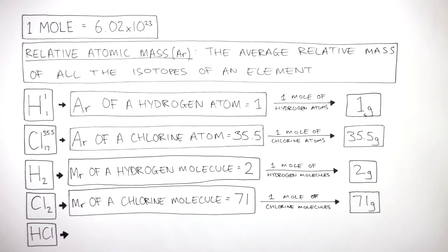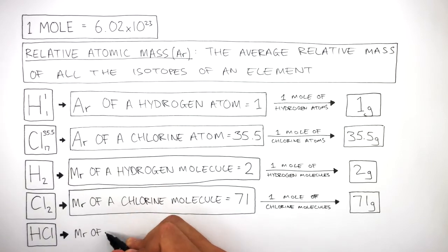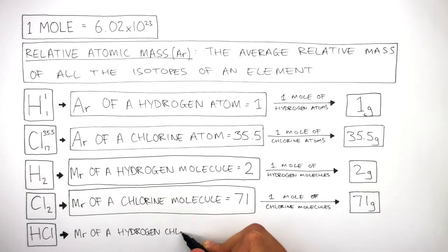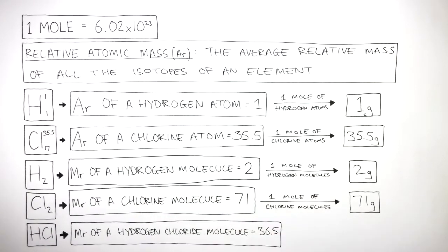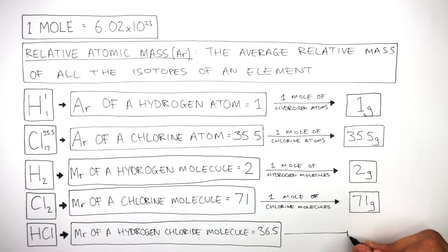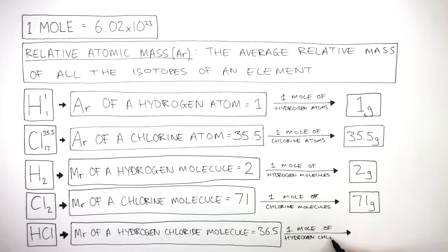HCl is a hydrogen chloride molecule, and the MR of a hydrogen chloride molecule is 36.5. To convert the MR into mass in grams, one mole of hydrogen chloride molecules is 36.5 grams.